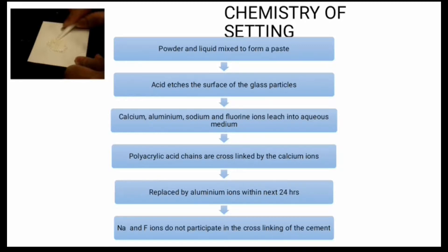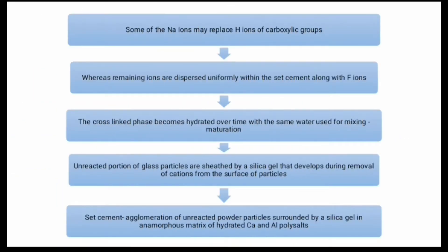In the chemistry of setting, the powder and liquid are mixed to form a paste. The acid etches the surface of glass particles, and calcium, aluminum, sodium, and fluorine ions leach into the aqueous medium. Polyacrylic acid chains are cross-linked by calcium ions, which are then replaced by aluminum ions within the next 24 hours.